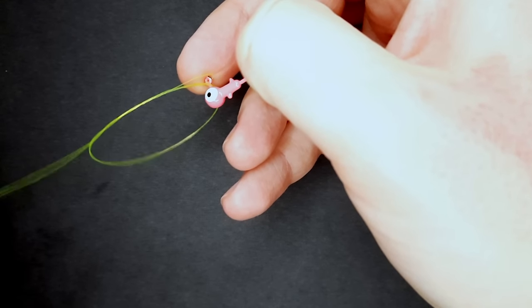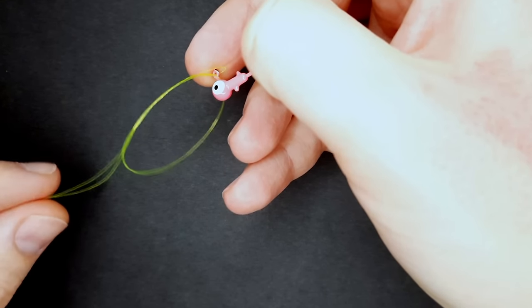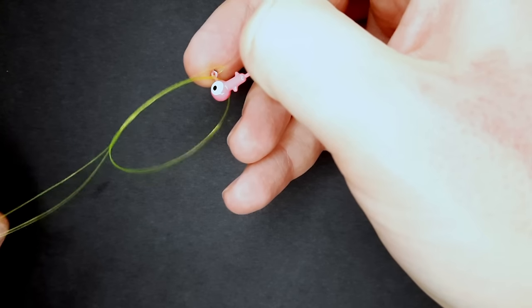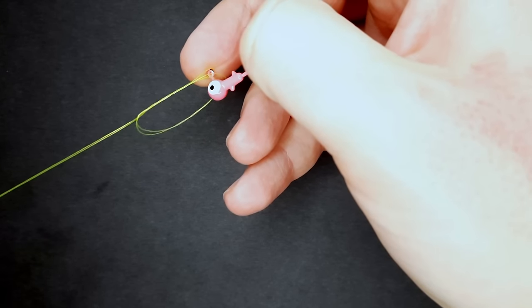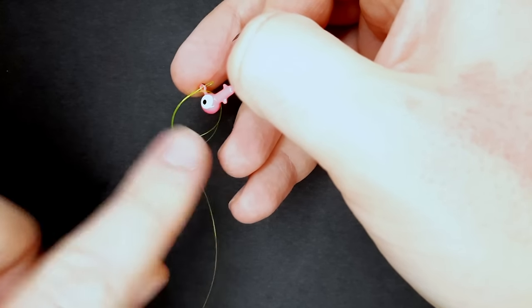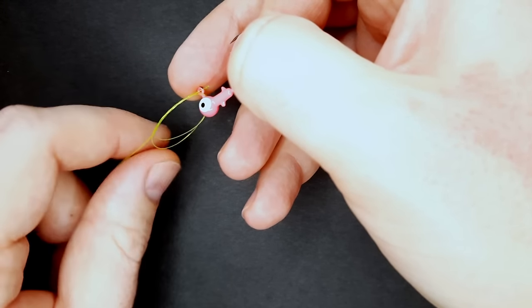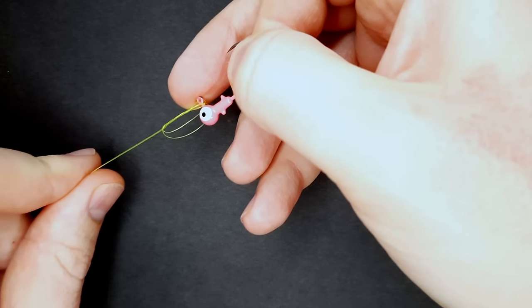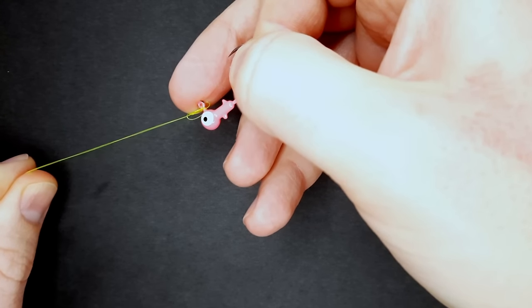Just like that. I'm just pulling the two lines here—one of them is the tag and one is the main line. You're just pulling like that, keeping your finger on top of the eyelet so the loop doesn't go over and around it. You're going to keep doing this until it's about right there.